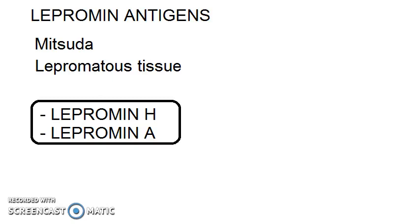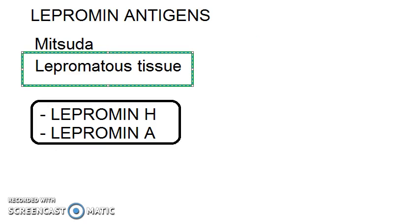In this video let us cover lepramine antigens. Mitsura was the person who gave the lepramine reaction. So how was the lepramine antigen prepared? First of all, they took the lepromatous tissue which was full of bacilli, and they boiled and emulsified it, and they got this original antigen called lepramine antigen.